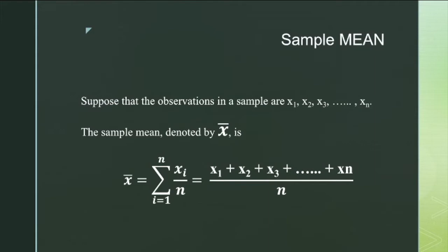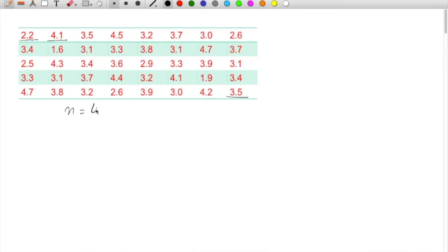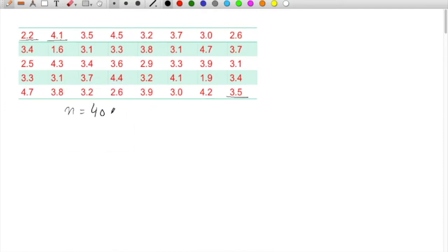Look at sample mean. If there are 40 values, so n will be 40. x1 to xn, you have 40 set of values, 40 values in a set. You can sum them all and divide by n will be your mean value. I'll show you how to do it. There are 40 values in this data.